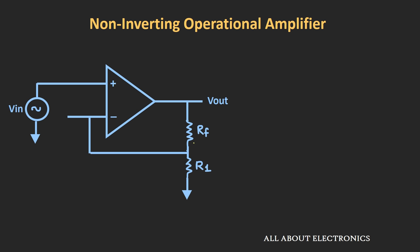Let us say the voltage at that node is Vx, and this Vx voltage is going as feedback to the inverting input terminal. Using the voltage divider rule, we can say that Vx equals R1 divided by (R1 plus RF) multiplied by Vout. This voltage will be going as feedback to the inverting input terminal.